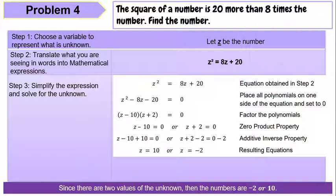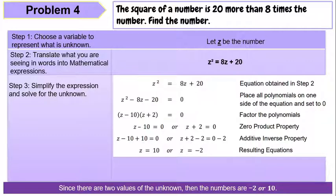Factoring this general trinomial: two numbers that multiply to negative 20 and add to negative 8 are negative 10 and positive 2. So the factors of z squared minus 8z minus 20 are the quantity z minus 10 times the quantity z plus 2 equals 0. Using the zero product property: z minus 10 equals 0 or z plus 2 equals 0. Using transposition: z equals 10 or z equals negative 2. Therefore, the numbers are negative 2 or 10.